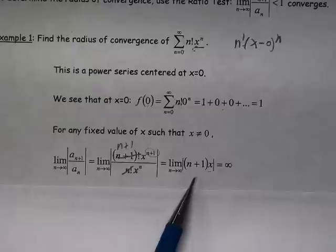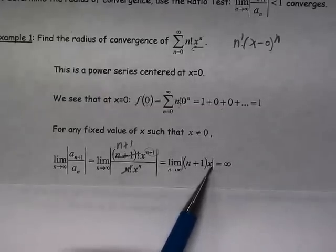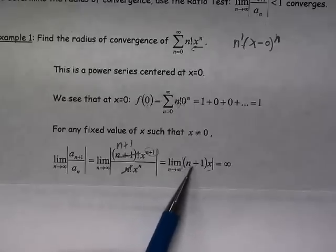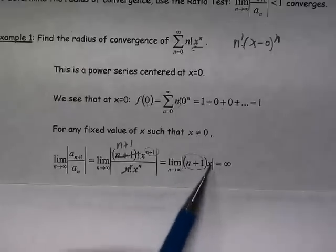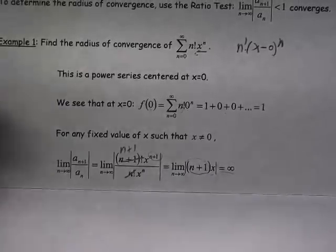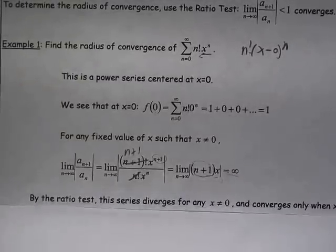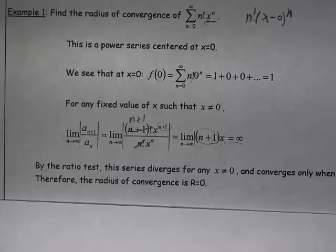Now, x is a fixed value, so x doesn't change. And I have the limit as n approaches infinity of n plus 1 times x. So obviously this is going to be infinity. So no matter what x is, that limit is infinity. And what does that mean? That means that the series diverges for any x other than 0.